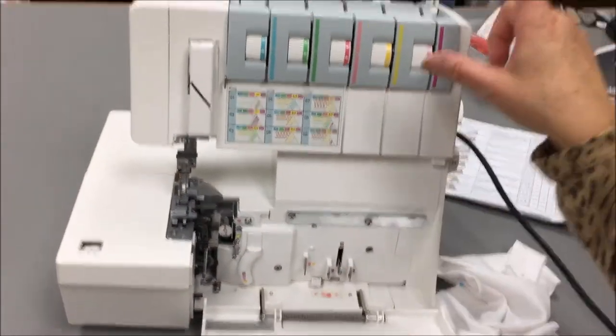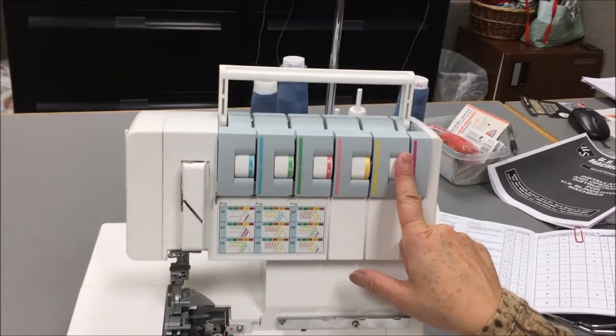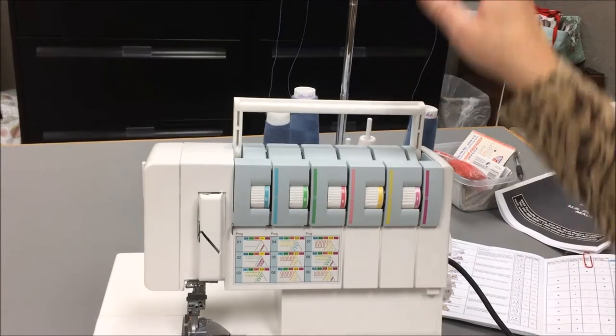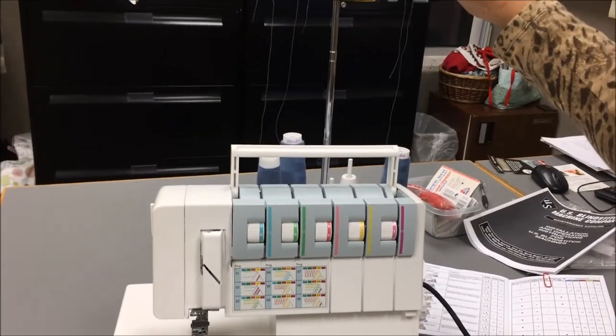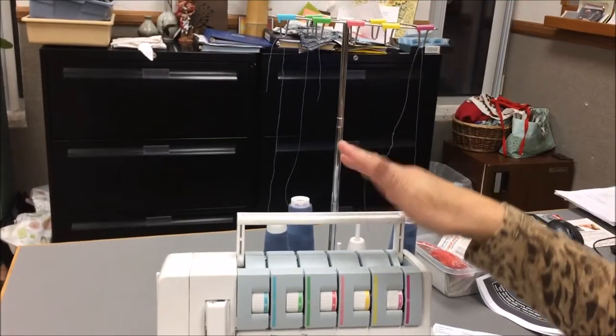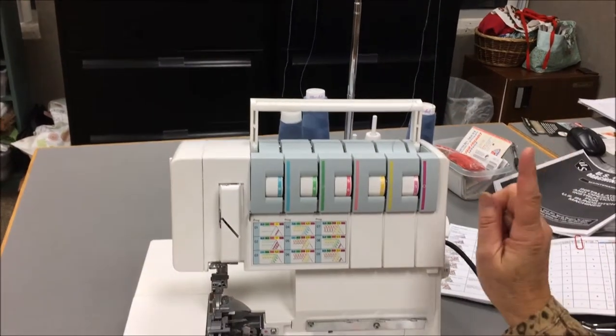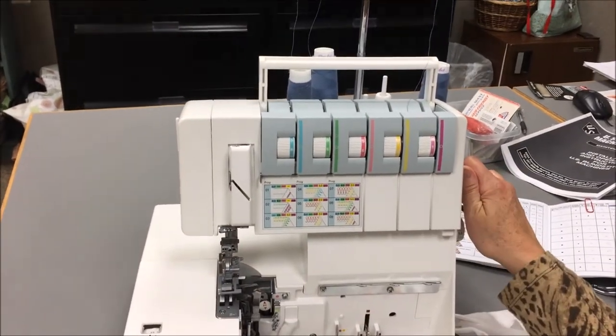The order of the threading will be the cover stitch looper, then the left needle, and the right needle. So we'll start up here. I already have the thread in the guide up here. It is very important that you remember a couple of things when you're threading. First, be sure to put the presser foot up. That will open up the tension discs.